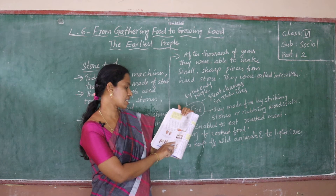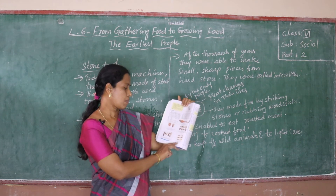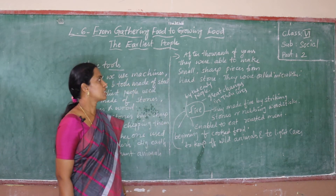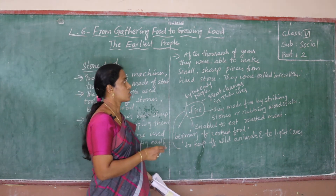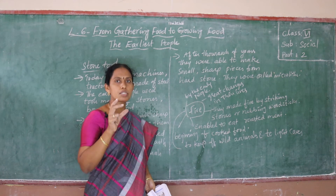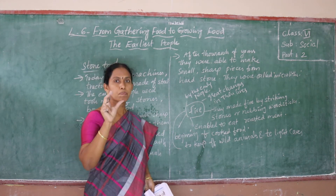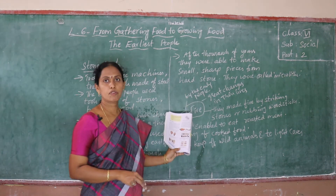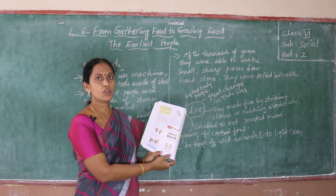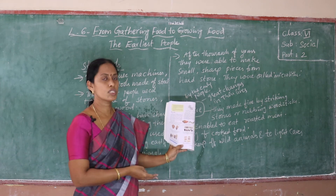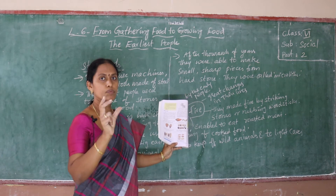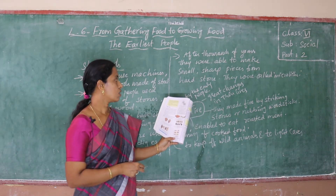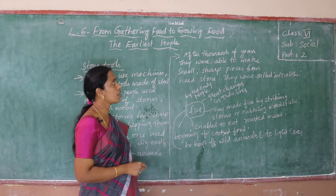Here some tools are shown — made from stone flakes, excavated in Amarabad, Nagarkarnul district. Also microliths from Ganpur, Adilabad district. After thousands of years they were able to make small sharp pieces from hard stone. These small sharp hard stones are called microliths.